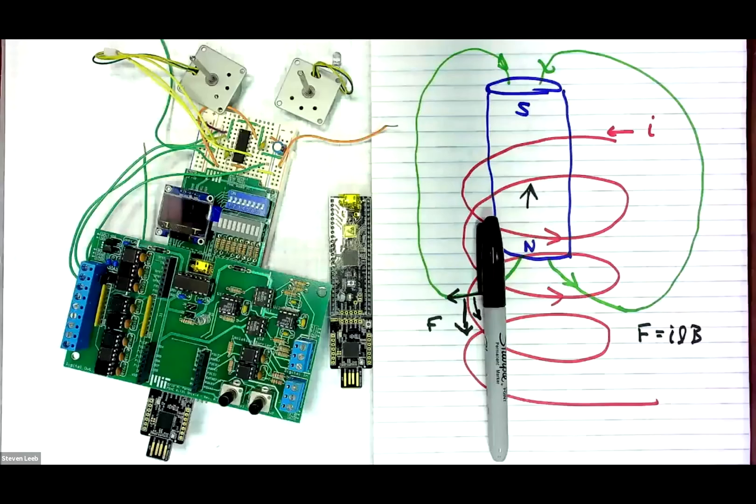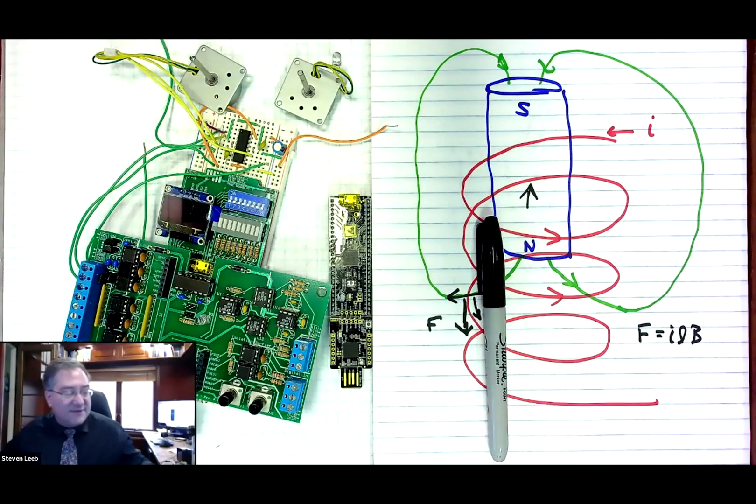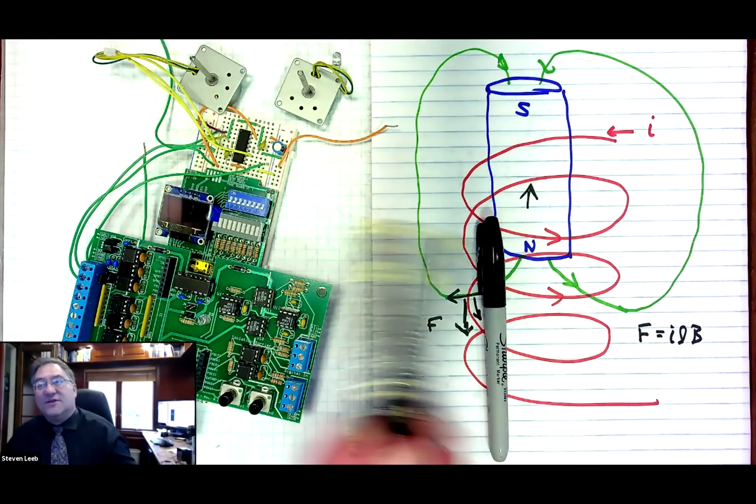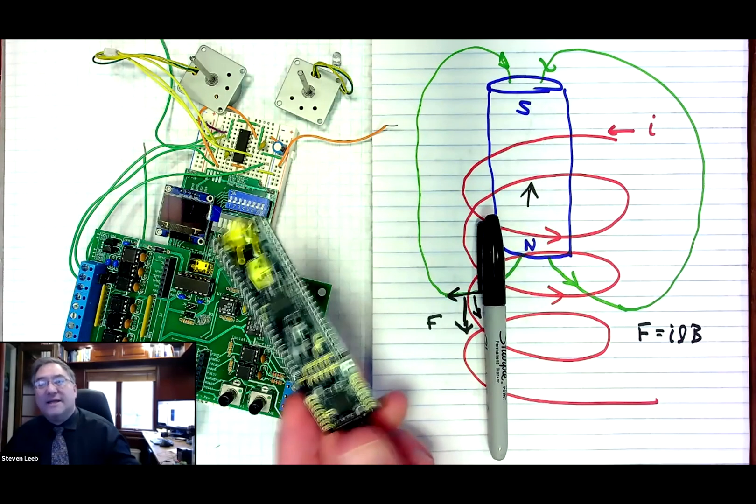He understands these machines in a way that you can actually probably count the number of people in the world living who understand them the way he does. So it is something where we will be using MATLAB and computer tools, or Octave probably this summer, which is a MATLAB clone, in order to model, simulate, and understand how these machines operate. We will also be doing things like we're going to not only send you the software, but also a hardware kit.